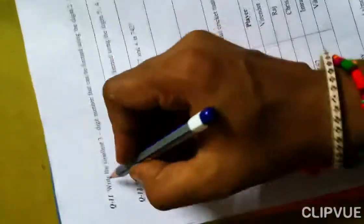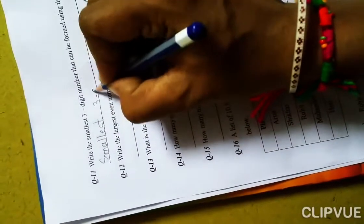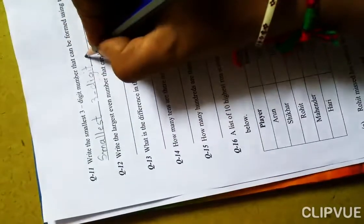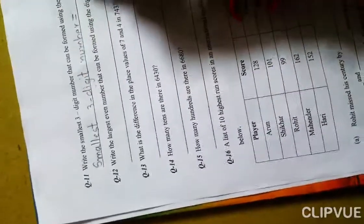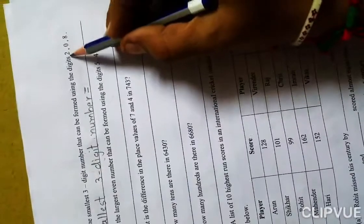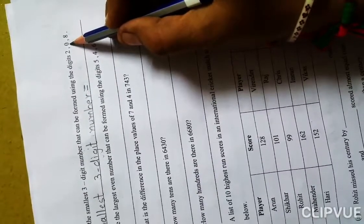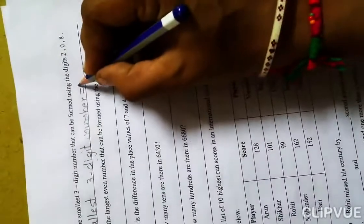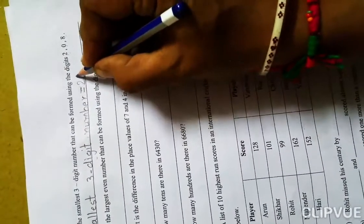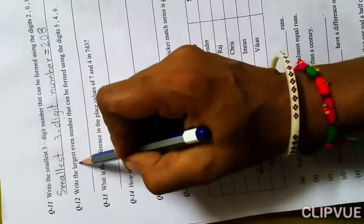First, we write smallest three-digit number equals... For making the smallest number, we find the smallest digit. Zero is the smallest, but we don't write zero at hundreds place, so we write the next smallest number which is 2. Then tens place is 0, and 8 at ones place, giving us 208.